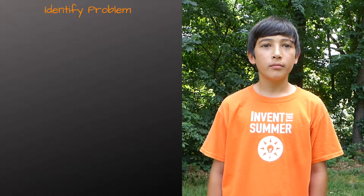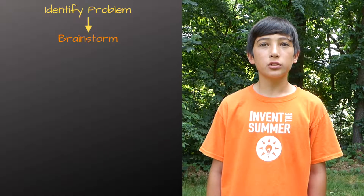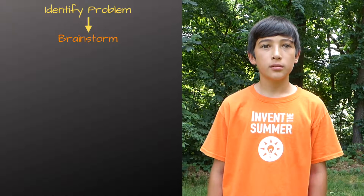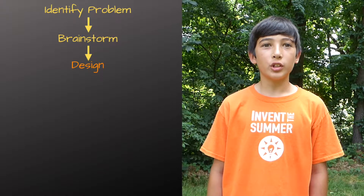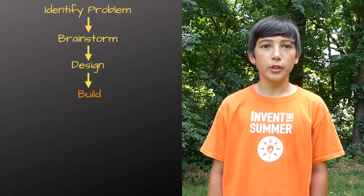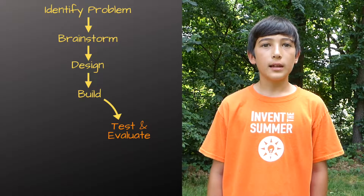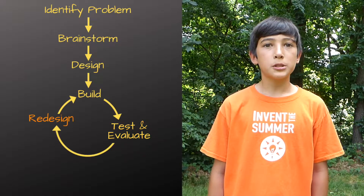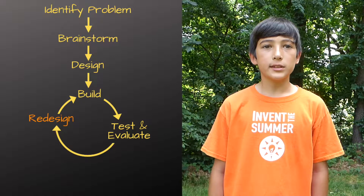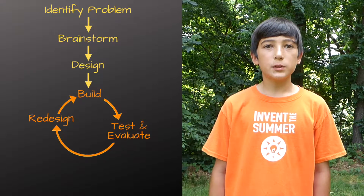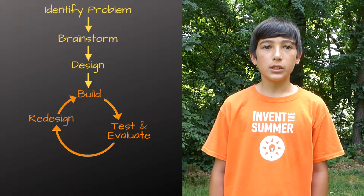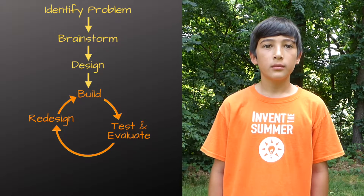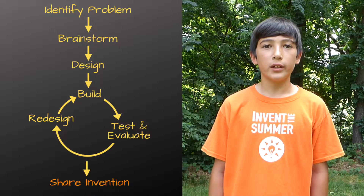Here are the steps of the invention process. Step one, identify a problem. Step two, brainstorm potential solutions. Step three, design your invention. Step four, build it. Step five, test your invention and evaluate any problems. Step six, redesign and rebuild as necessary. Repeat steps five and six until you have a working invention. Step seven, share your invention.